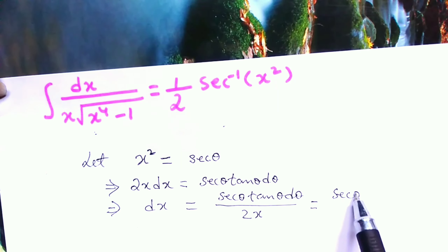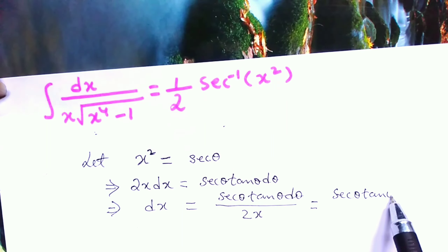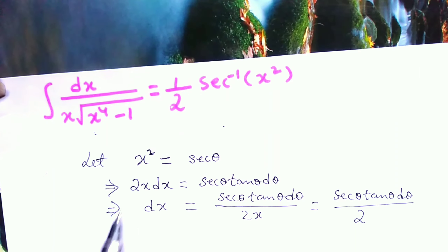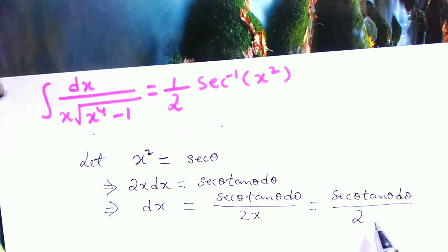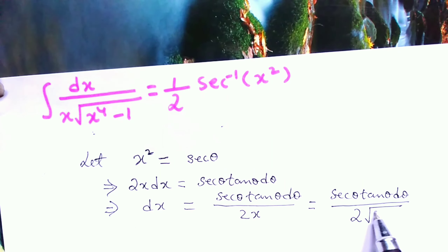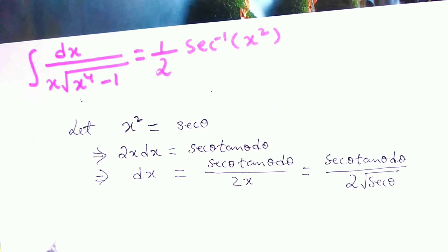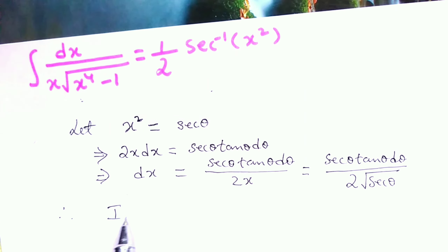Note that we have to express x in terms of θ. So dx becomes sec θ tan θ dθ divided by 2. From our substitution, x is the square root of sec θ.